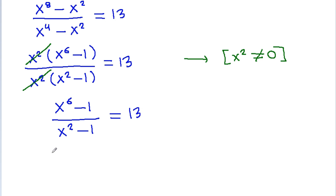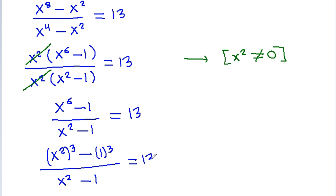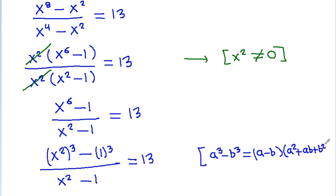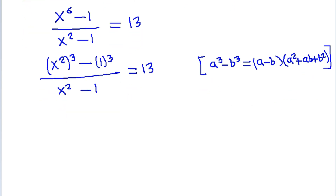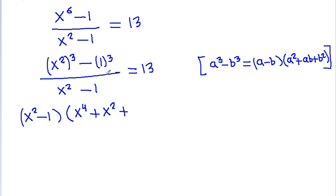Now x⁶ - 1 can be written as (x²)³ - 1³. Using the difference of cubes formula, a³ - b³ = (a - b)(a² + ab + b²), we expand (x² - 1) times (x⁴ + x² + 1), divided by (x² - 1), equals 13.